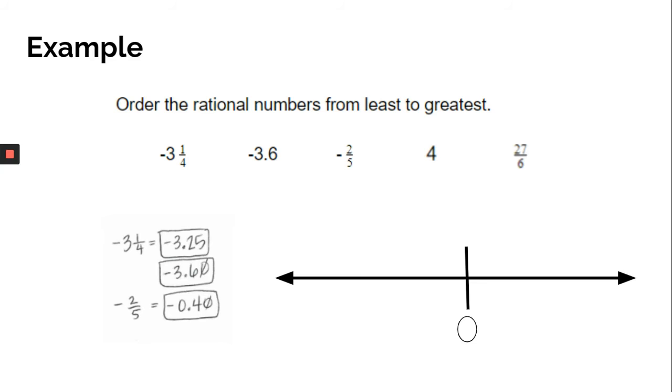Negative two-fifths I know is equivalent to negative four-tenths. We can convert that by dividing. You could divide your numerator by your denominator, or you could compare it to a fraction with a denominator of ten to convert that fraction.